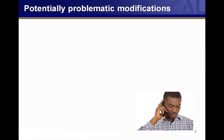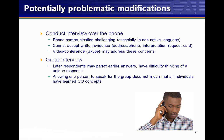Another potentially problematic modification is doing the assessment in a group setting, where a number of people sit together and each gives an answer to the question that everyone else can hear. This is difficult because later respondents may just parrot earlier answers. They may also have difficulty thinking of a unique response if they're the last person in a series of five or six to answer. Another issue is that allowing one person to speak for a group does not mean that all individuals have learned CO concepts — the concepts in the assessment are critical for everyone to know.